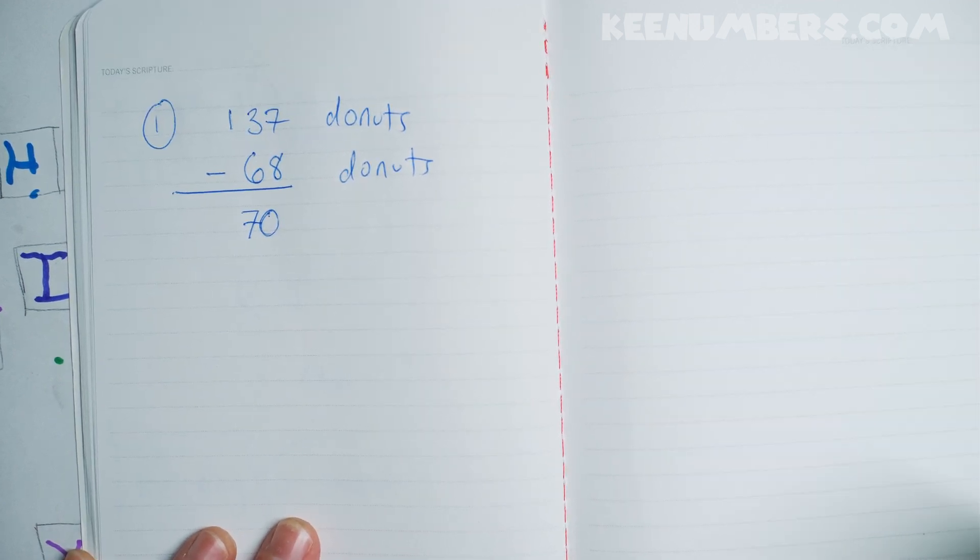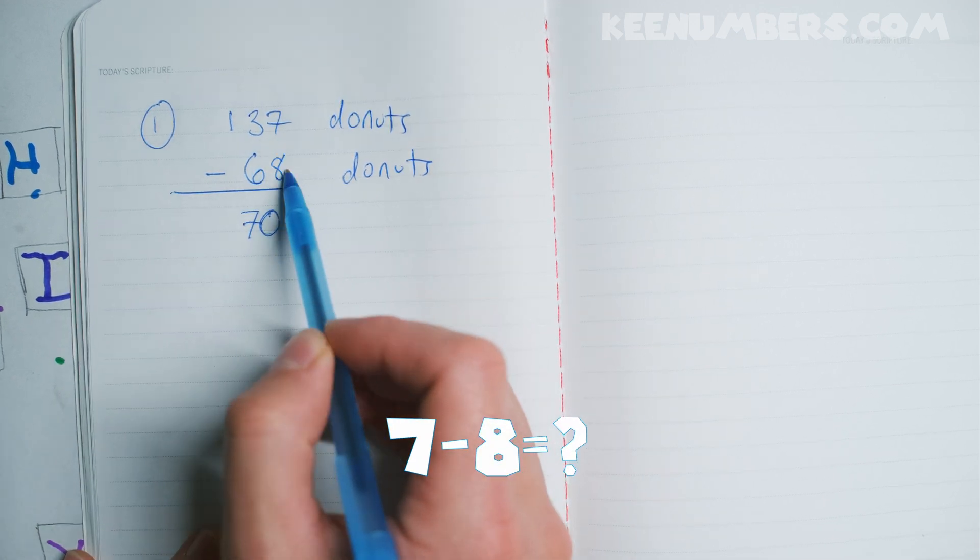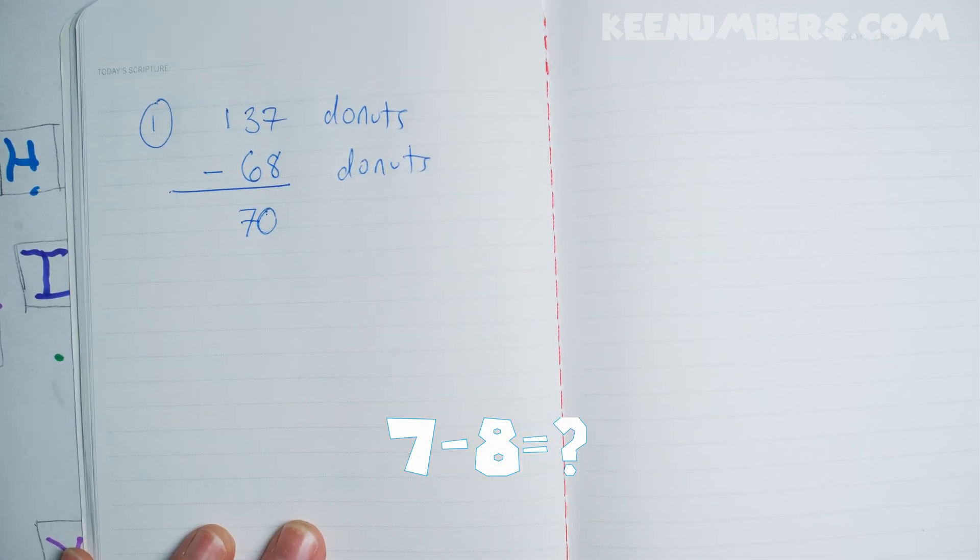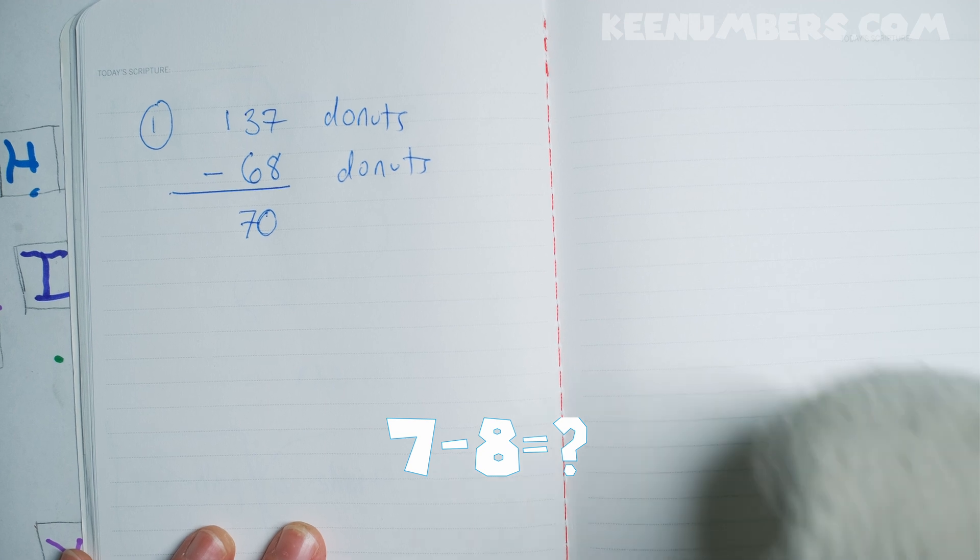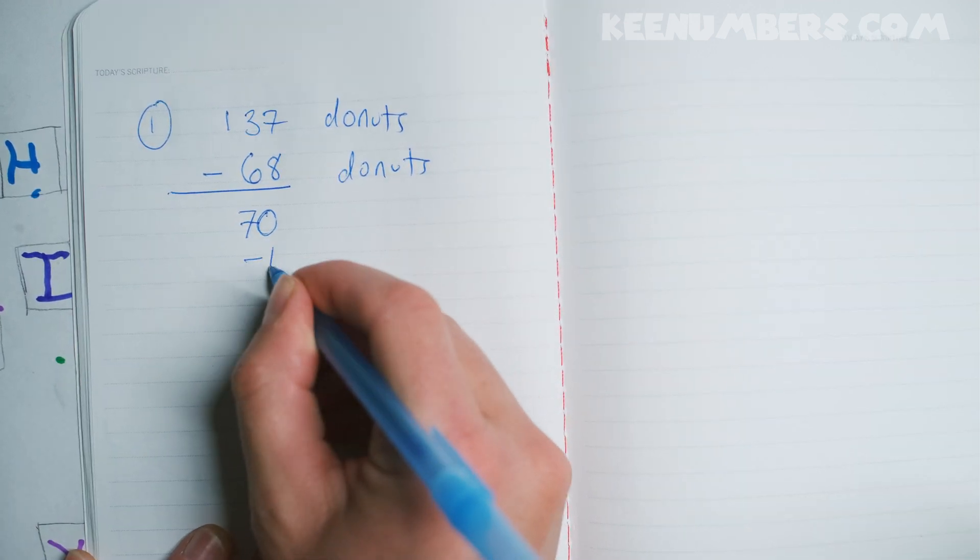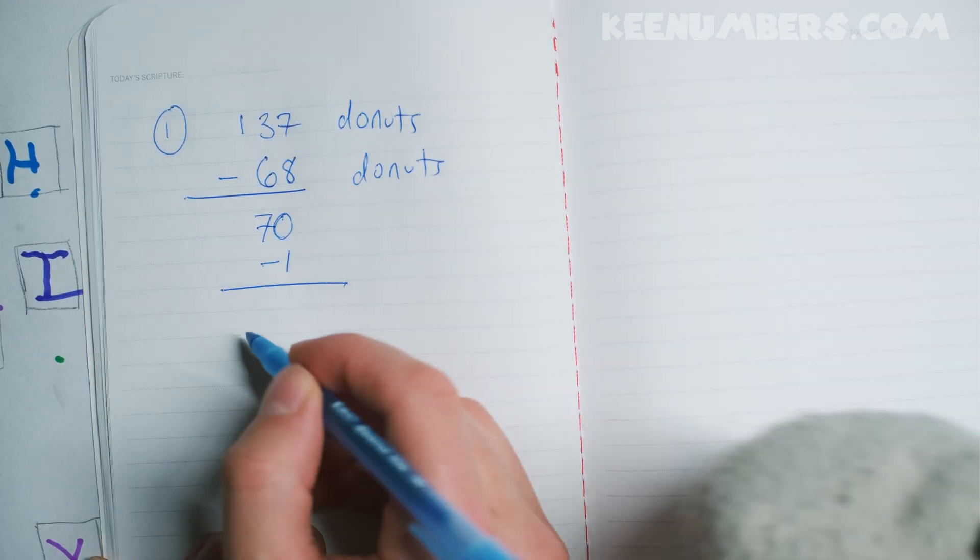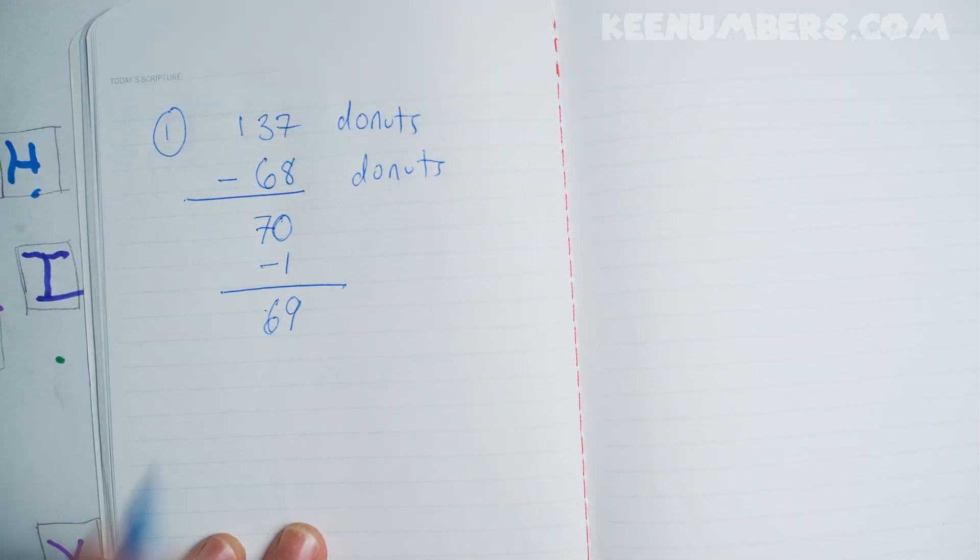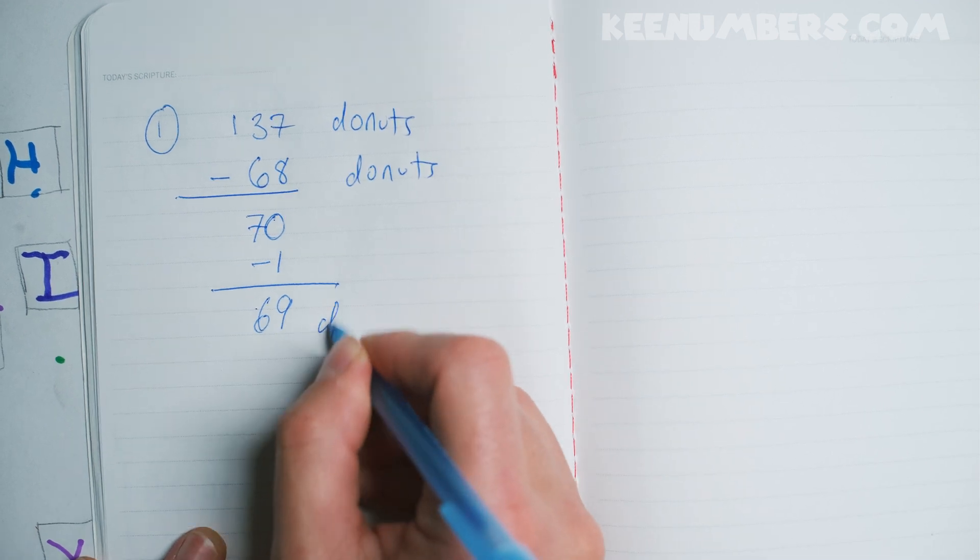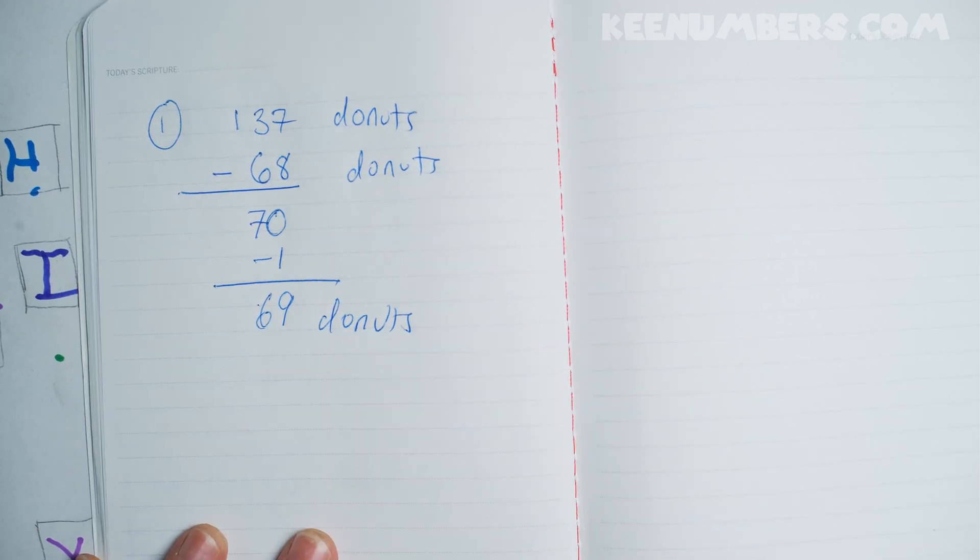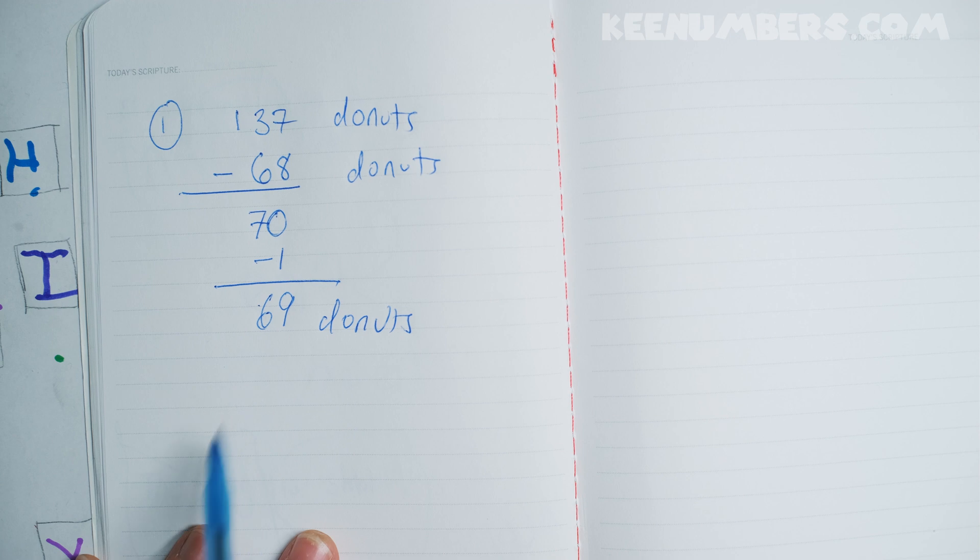I don't know. Negative 69! Negative 69? No. What's 7 minus 8 donuts? That's negative 1. Negative 1. Very good. So what's 70 minus 1, Pirate Sam? I said 69. I said 69. So, Pirate Sam ate a lot of donuts, but there's still 69 donuts left over.